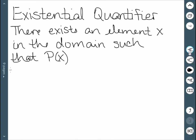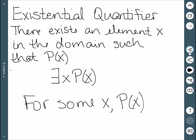This just says there is at least one. There could be more than one in an existential quantifier; we just need a minimum of one. We denote it by this backwards E. This is read 'for some x, P(x).'